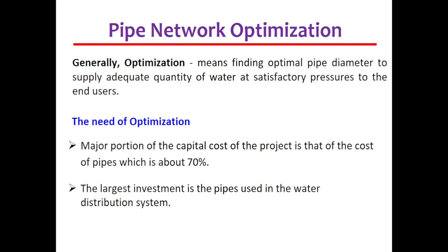But generally, when we say optimization, it means finding the optimal pipe diameter to supply adequate quantity of water at satisfactory pressure to the end users. Here, we mean that when you are doing optimization, you are making the best selection of pipe diameter which will supply the adequate quantity of water at satisfactory pressure to the end users.